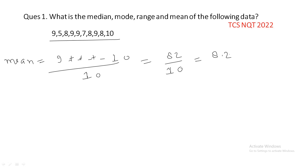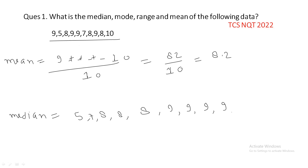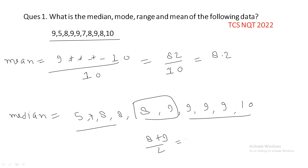The mean is 8.2. Now to find the median, we arrange the terms in increasing order: 5, 7, 8, 8, 8, 9, 9, 9, 9, 10. There are 10 terms total, so we take the two middle terms. The median is 8 plus 9 divided by 2, which is 17 upon 2, giving us 8.5.